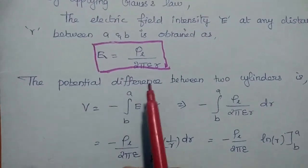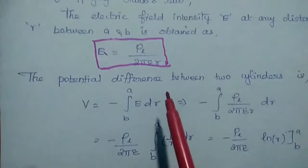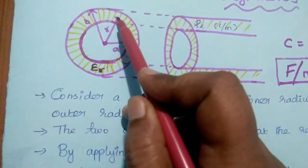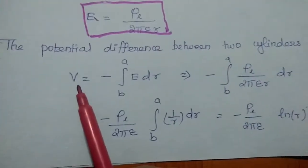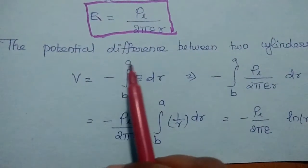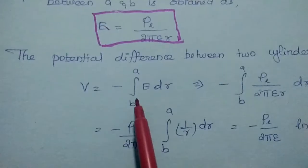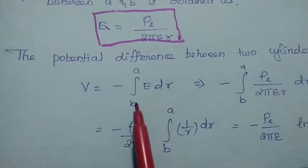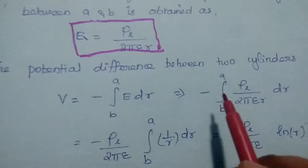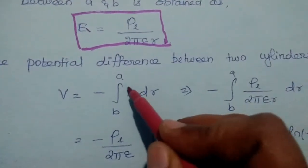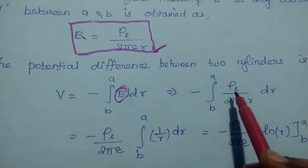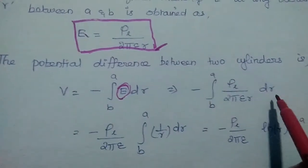Next, the potential difference between the two cylinders. We are going to find out the capacitance between these two points at distance R. The potential difference V is equal to minus the integral of E dot dR. Here the limits are A and B, where the upper limit is the inner radius A and the lower limit is the outer radius B. So E can be replaced by Rho L divided by 2 pi epsilon R, giving minus the integral from B to A of Rho L by 2 pi epsilon R into dR.